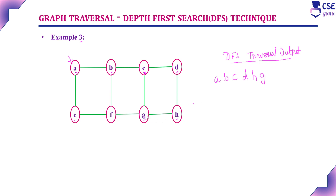Currently visited vertex is G. The adjacent unvisited vertex to G is F, because C and H are also adjacent but already visited. So the unvisited adjacent vertex is F — visit F next. Currently visited vertex is F, and its adjacent unvisited vertex is E. Visit E next. We have now visited all vertices in the given graph using DFS traversal technique. Now we will discuss how to implement this depth first search traversal step by step using a stack data structure.